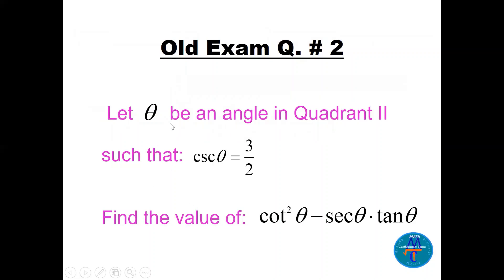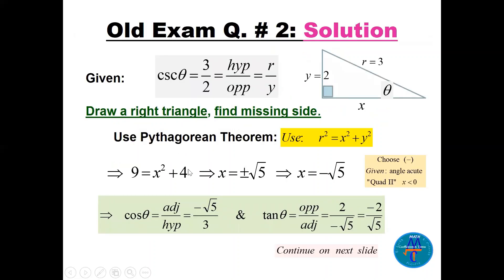Question number two: let theta be an angle in quadrant 2 such that cosecant theta equals 3 over 2. Find the value of cotangent squared theta minus secant theta times tan theta. We can draw a triangle. In quadrant 2, y is positive and x is negative. Cosecant theta equals 3 over 2, which is r over y.